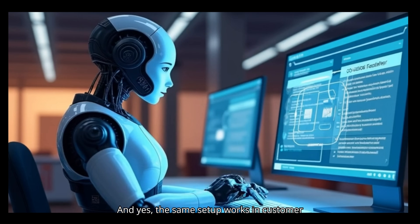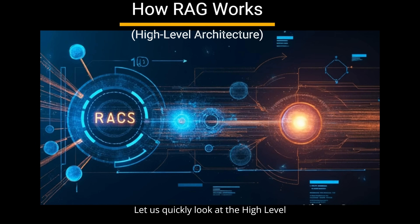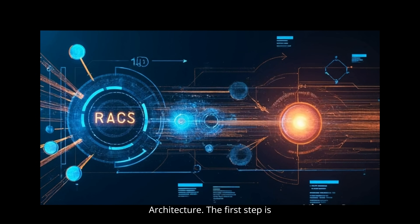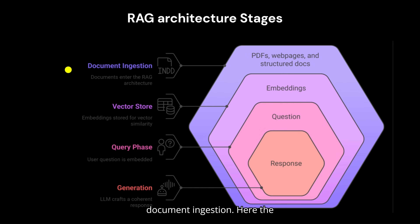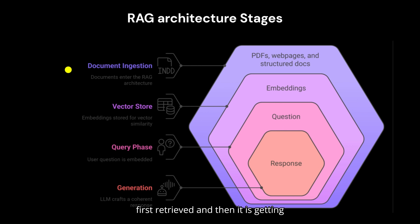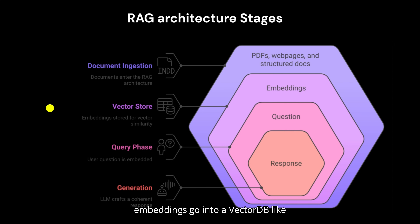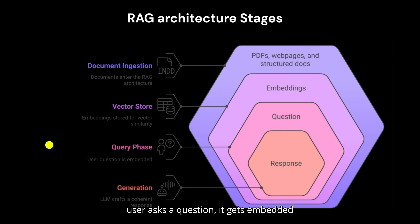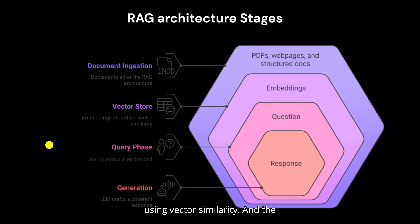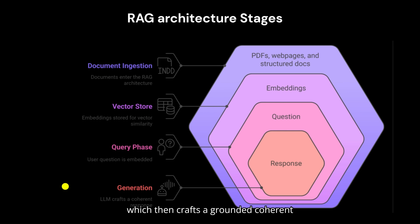And yes, the same setup works in customer-facing chatbots too. Let's quickly look at the high-level RAG architecture. The first step is document ingestion — external resources like PDFs, web pages, and structured documents are retrieved, processed, chunked, and embedded. Second is the vector store — these embeddings go into a vector DB like Pinecone or FAISS. Third is the query phase — when a user asks a question, it gets embedded and the system retrieves similar chunks using vector similarity. Finally, in the generation phase, the retrieved context is fed into the LLM, which crafts a grounded, coherent response.